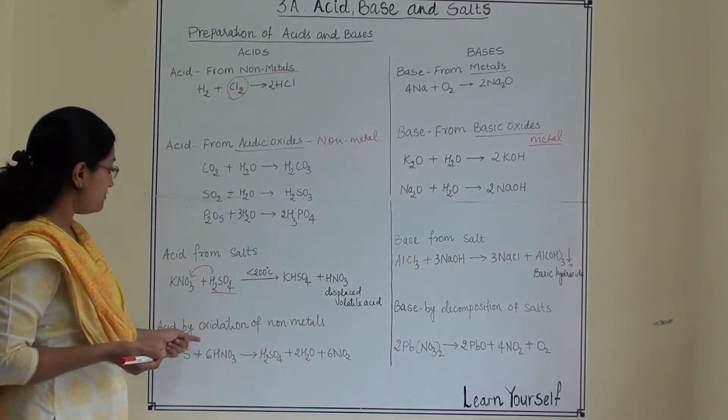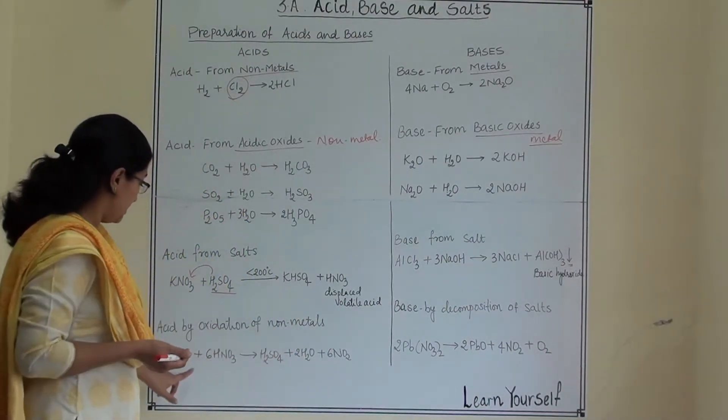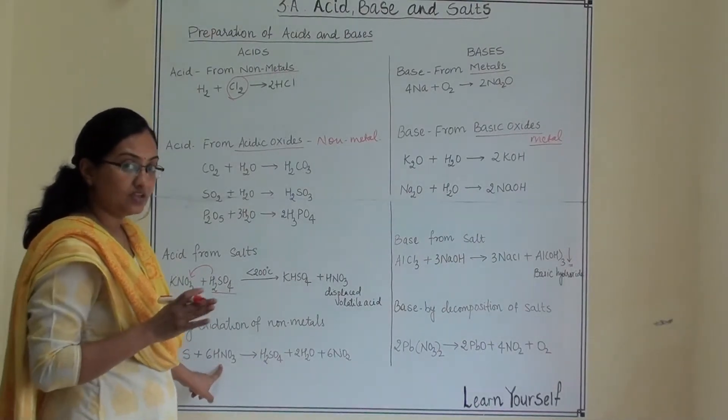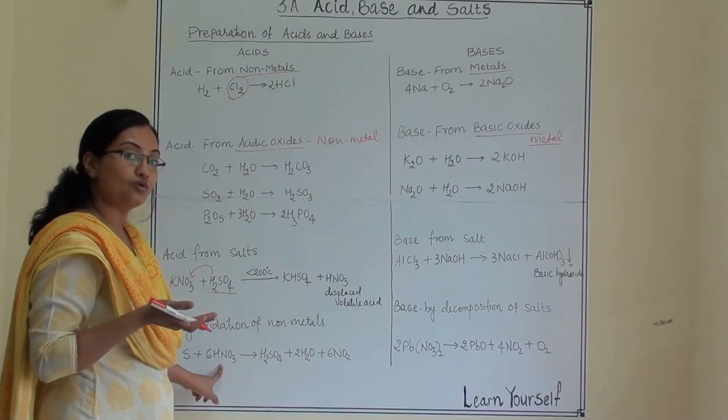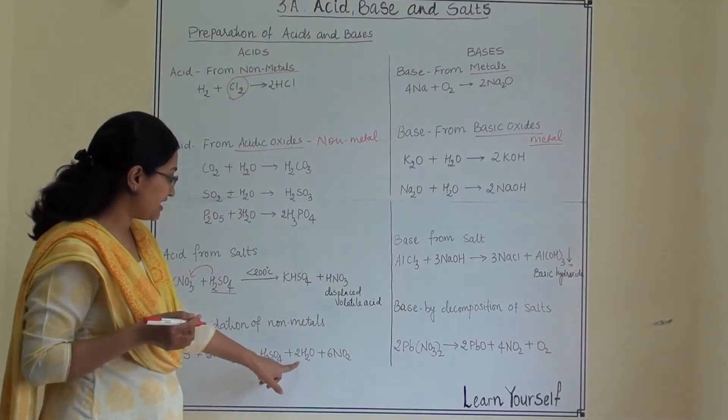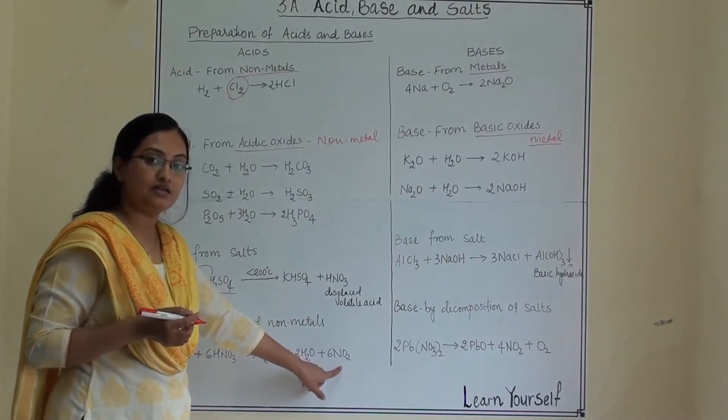Now acid by oxidation of non-metals. So sulphur when it reacts with acid it undergoes oxidation and it gives us H2SO4, sulphuric acid, water and nitrogen dioxide. So here it is giving us acid.